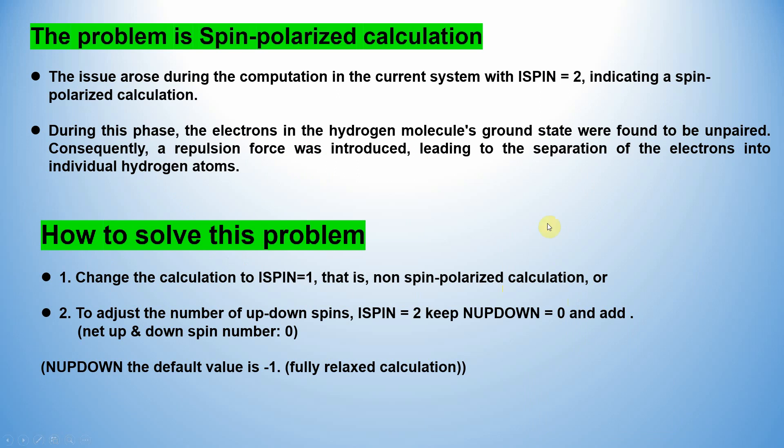The problem is spin-polarized calculations. This issue arose during the computation in the current system with ISPIN=2, indicating spin-polarized calculations. During this case, the electrons of the hydrogen molecule's ground state were found to be unpaired if you use ISPIN=2.